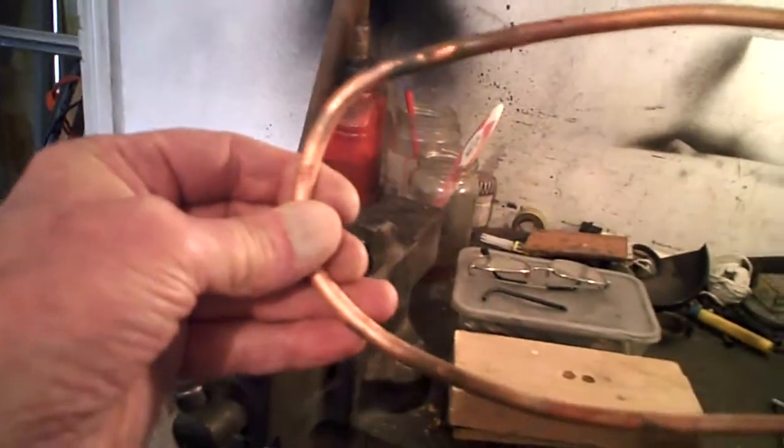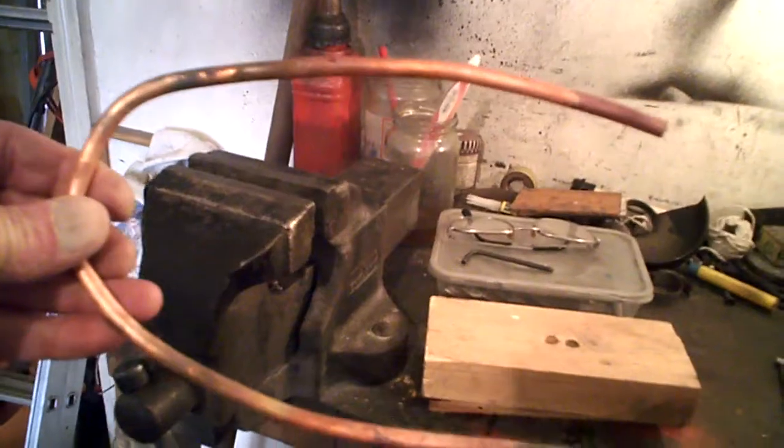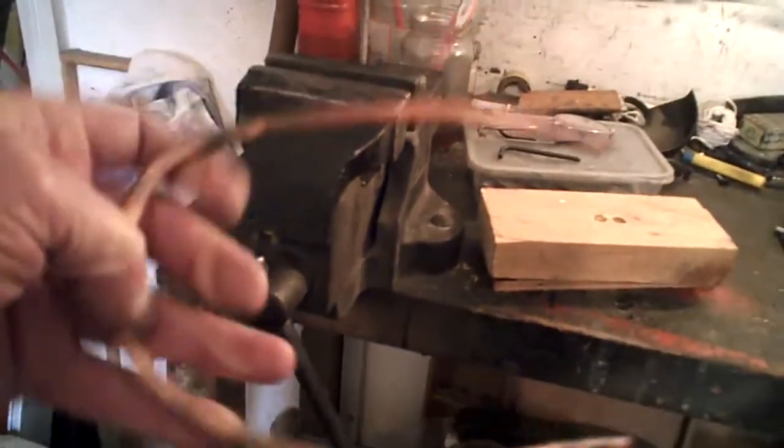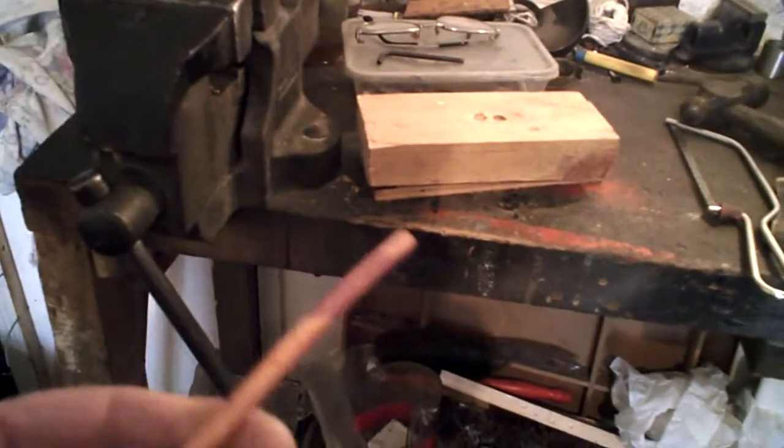But with copper, which is work-hardening, to soften it, you just heat it up and dip it in some water, quench it. It's simple. And it makes it almost soft as plasticine.